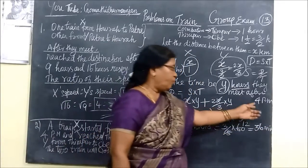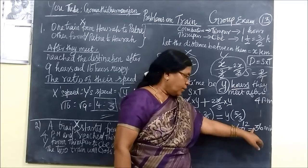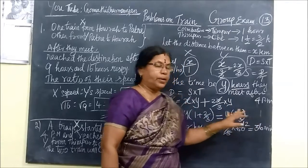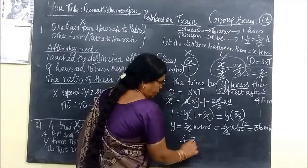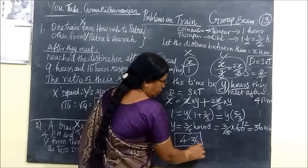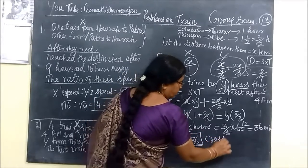So after 4 pm. 4 pm 36 minutes. They meet each other at some place. So at 4:36, the two trains cross each other.